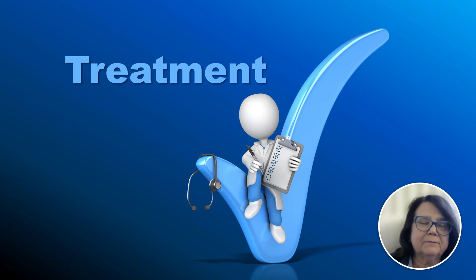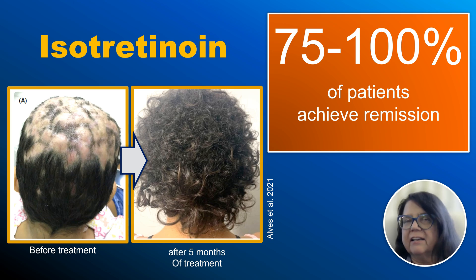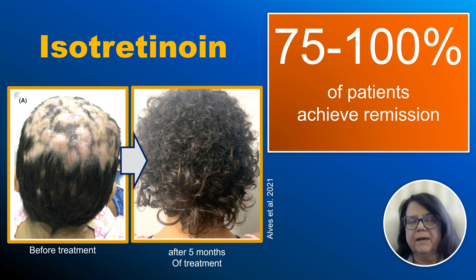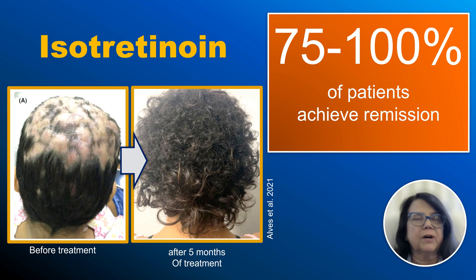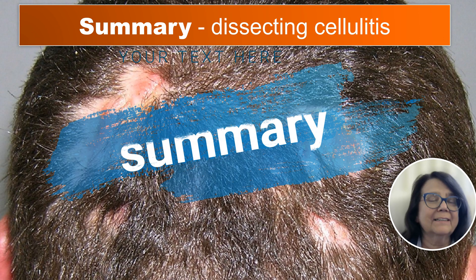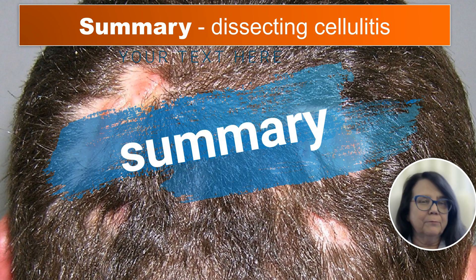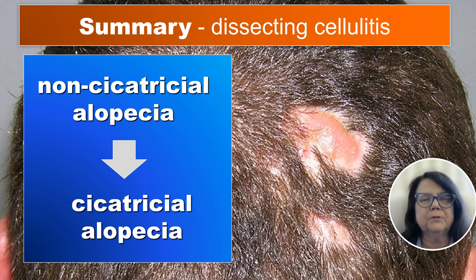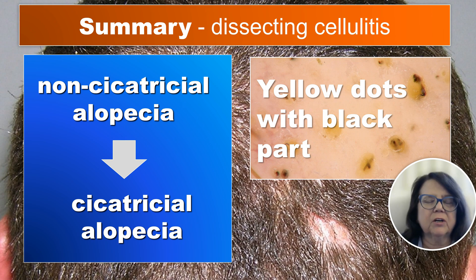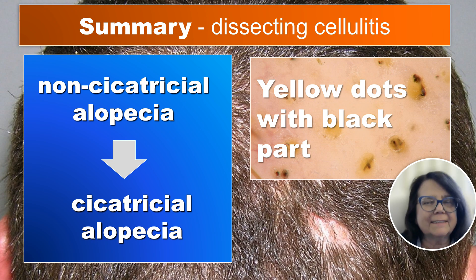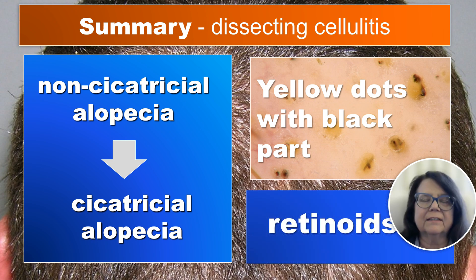Regarding treatment, the treatment of choice are retinoids, and they are effective in up to 100% of patients. Unfortunately, there are patients who will have a relapse, and in such cases we have to search for other treatment options, including new biological treatments. To summarize: dissecting cellulitis starts as non-cicatricial alopecia and then turns into cicatricial alopecia. The most typical trichoscopy finding are yellow dots with a black dot or black structure inside, and retinoids are the treatment of choice.